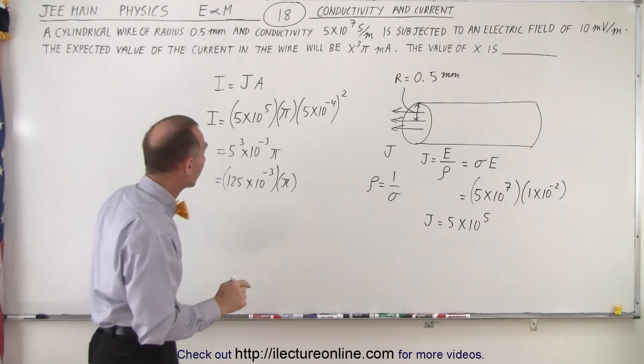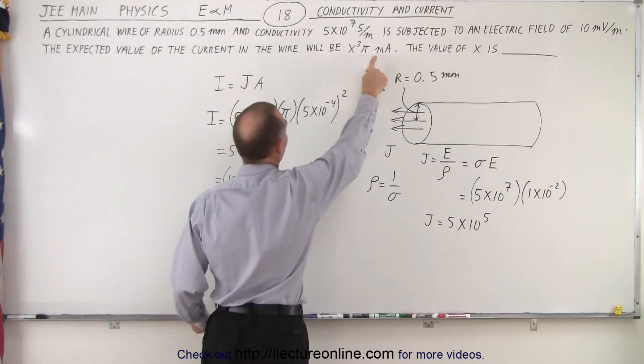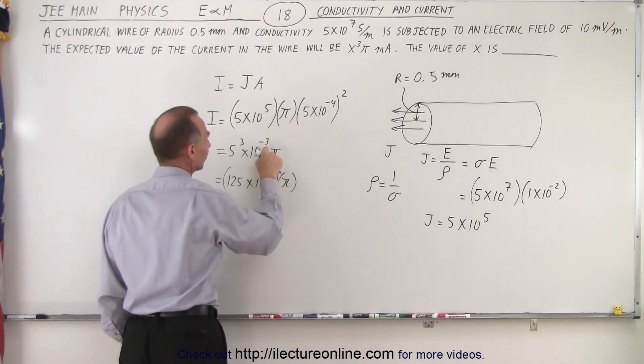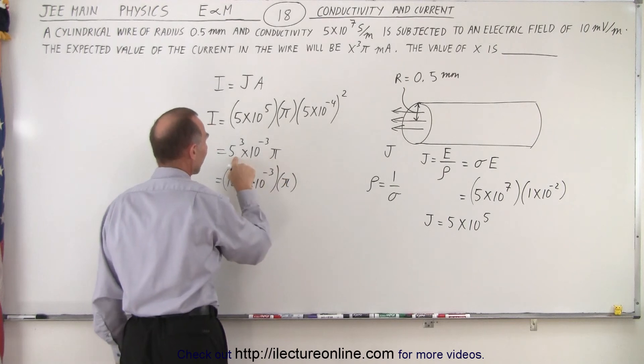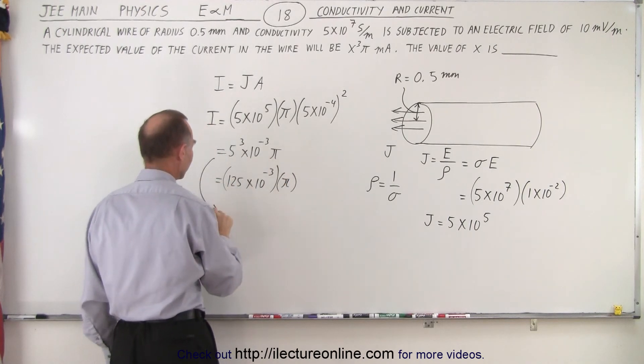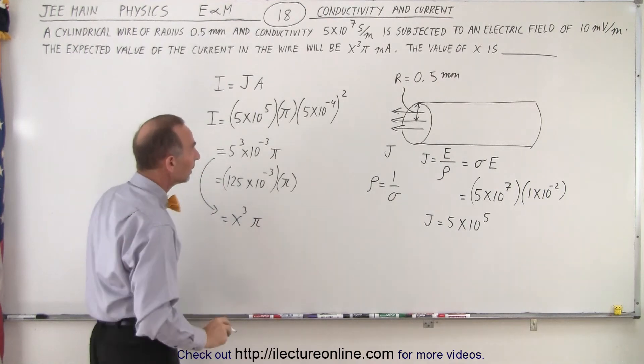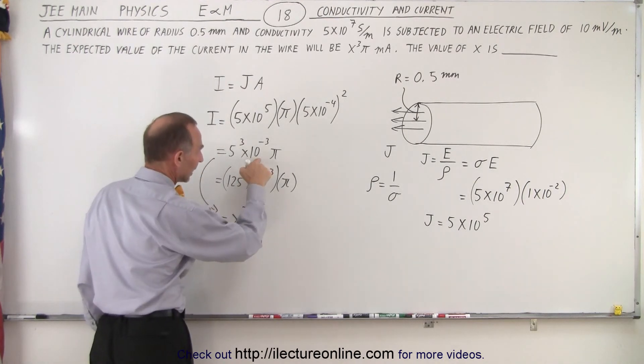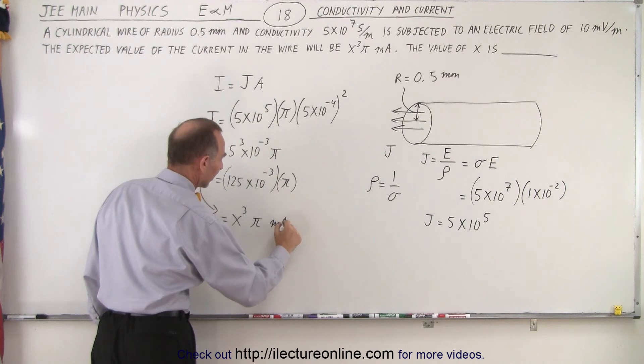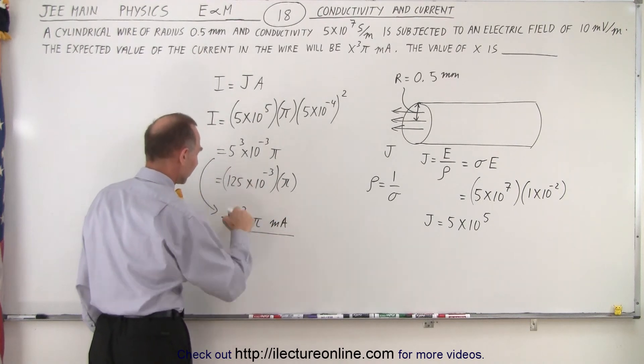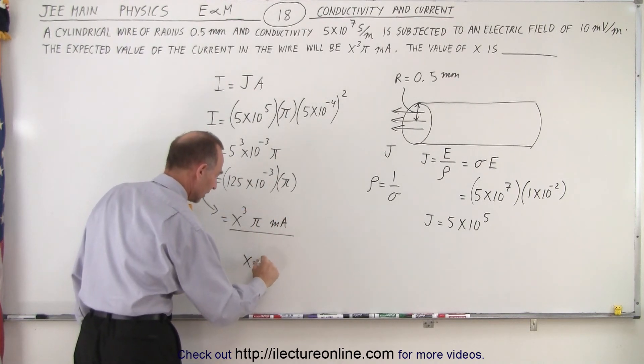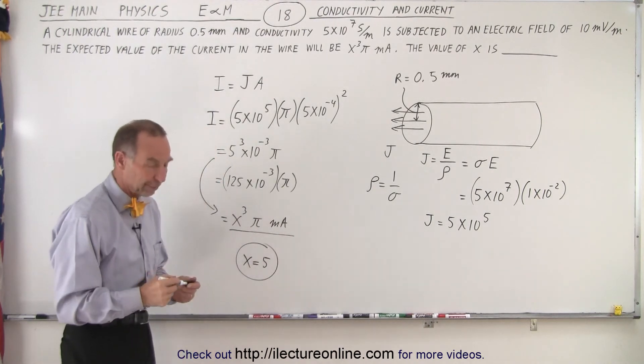Now let's look at the answer. They want in terms of x cubed times pi milliamps. Well, 10 to the minus 3 is milli. We have the pi. We have the 5 cubed. So this is the same as x cubed times pi milliamps. And so therefore we know that x equals 5. And that is the correct answer.